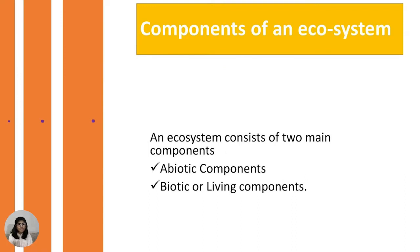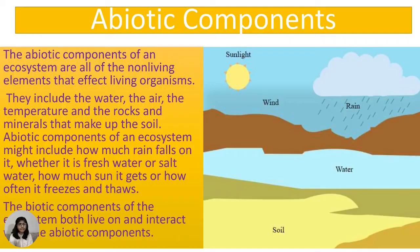Components of an ecosystem: An ecosystem consists of two main components or parts — biotic and abiotic. Abiotic means non-living things, and biotic means living components or living things.